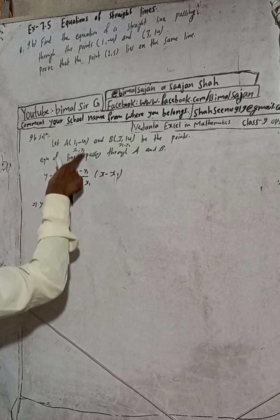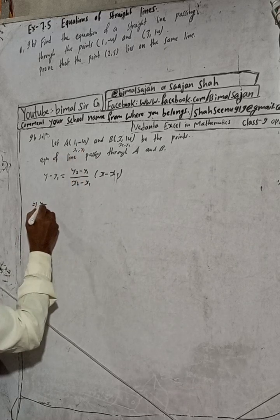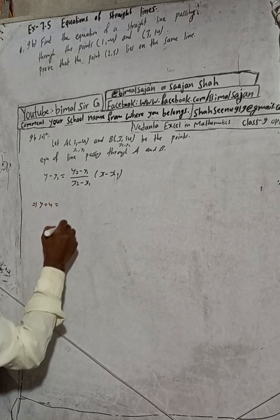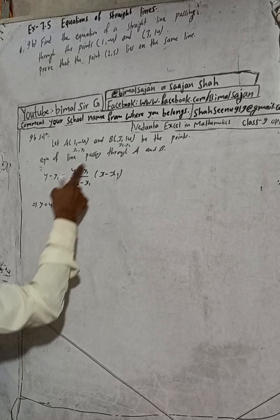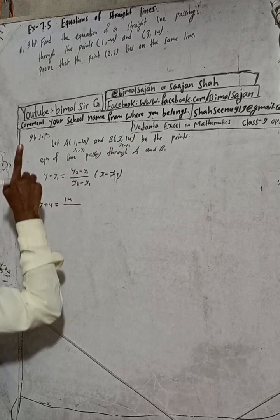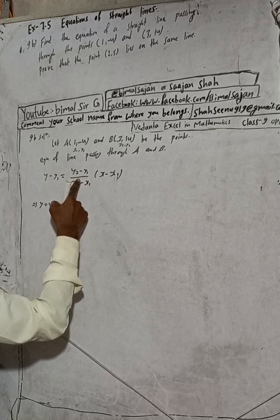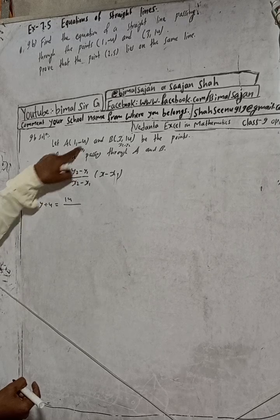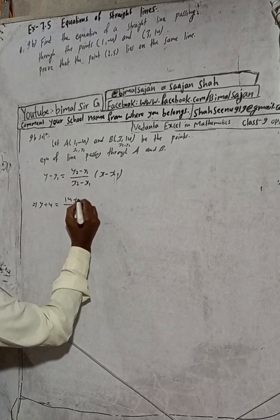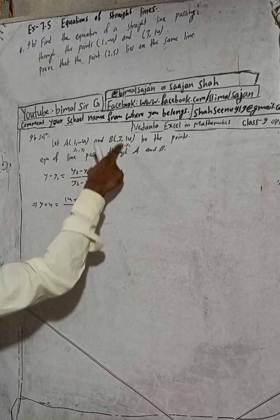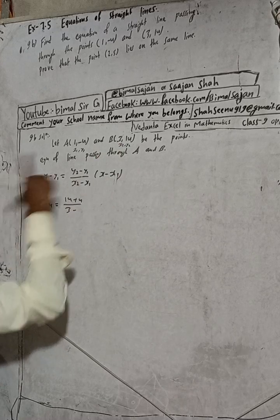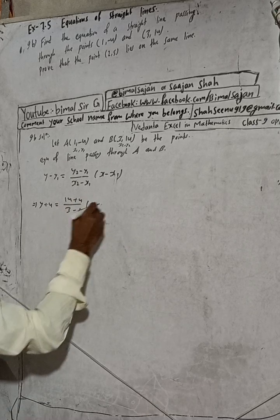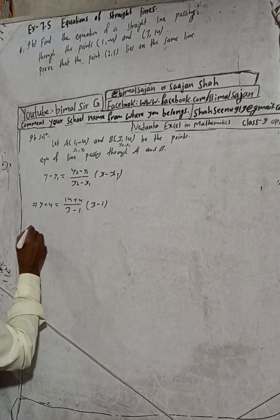Substituting the values: y minus y1 — y1 is minus 4, so that becomes y plus 4. This equals y2 minus y1, which is 14 minus (minus 4), giving us plus 4. Then x2 is 3, minus x1 which is 1, giving us 3 minus 1. And x minus x1 is x minus 1.